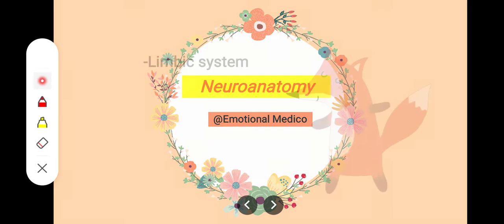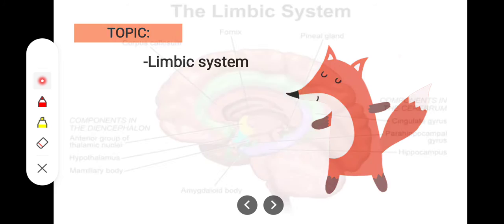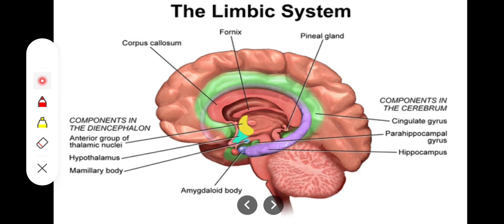Assalamu alaikum. In this video we will take a look at the limbic system. The word limbic itself means at borderline or at margin. Previously it was said that the structures present at the borderline between the cerebrum and the hypothalamus are regarded as the limbic system. But now we know that it is basically a group of certain portions of the brain concerned with the activities of behavior, drive, emotions, and memory.